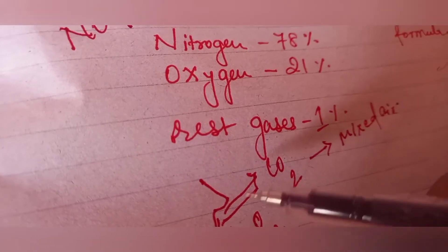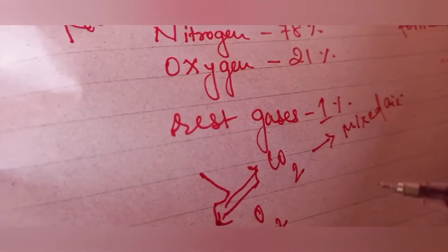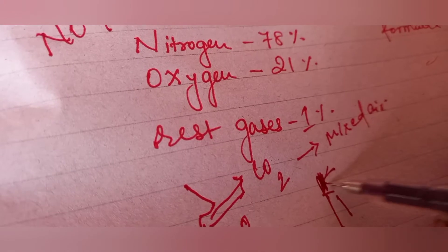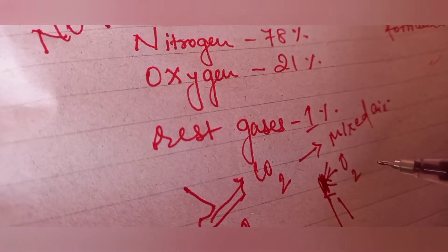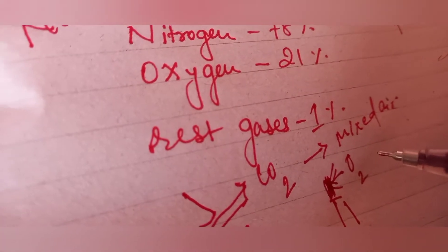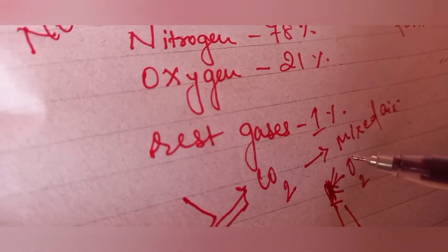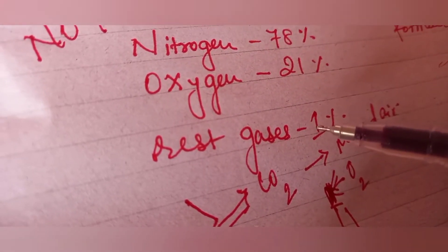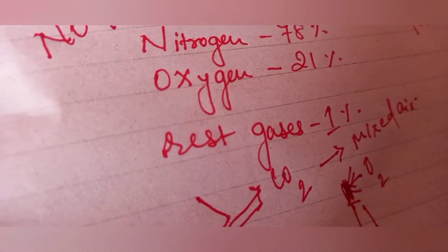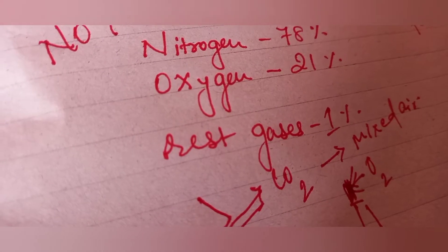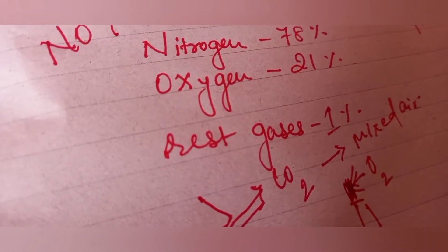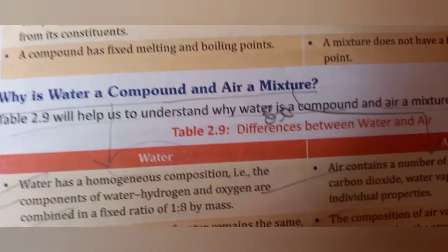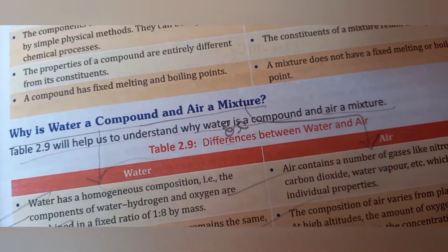The oxygen hasn't changed its property. Whenever you burn a candle, it will burn if kept in air because oxygen in air will support the burning. That is the difference between mixture and compound. When carbon dioxide or other things are mixed in a mixture, there is no exchange of energy. Air also doesn't have any fixed melting or boiling point. We can separate the different components. You can see these differences on page number 26 and 27 of your book — the differences between compound and mixtures.